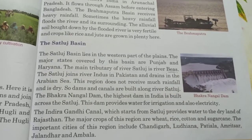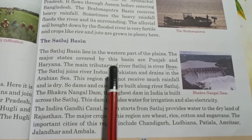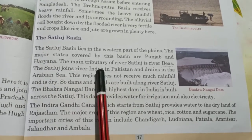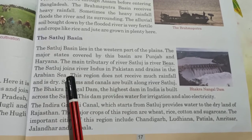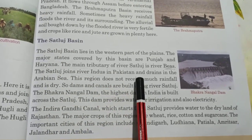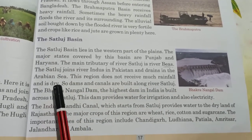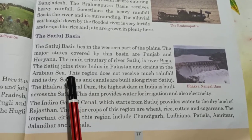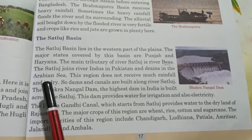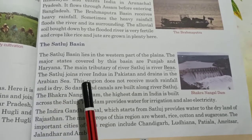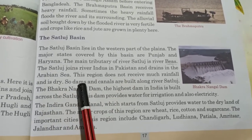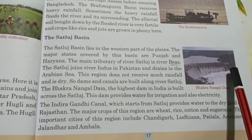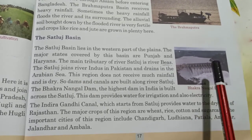The Sutlej joins river Indus in Pakistan and drains into the Arabian Sea. Unlike the Brahmaputra Basin, this region does not receive much rainfall and is dry. Because of this, dams and canals are built along river Sutlej.